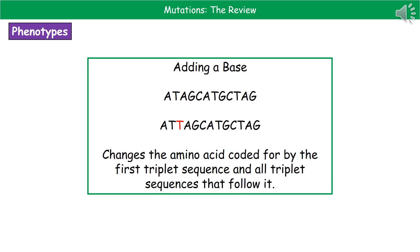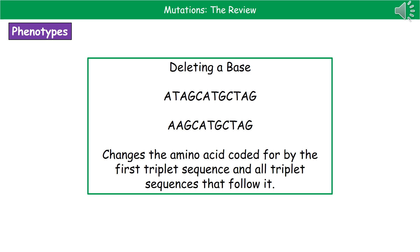In the second example, we can add a base. Starting with the same DNA sequence, we've added a second T. As a result, that first triplet has changed from ATA to ATT. But unlike just swapping a base, this shifts everything out of place — it changes the code not only for the first amino acid but potentially for every amino acid that follows. In the third example, we delete a base — removing that T — which again shifts all the following triplets, meaning the first amino acid will be different and every amino acid after it in the chain could also be different.